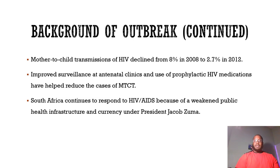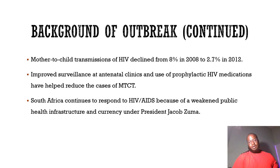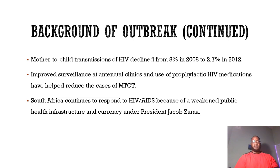Continuing background on the outbreak: mother-to-child transmission of HIV declined from 8% in 2008 to 2.7% in 2012. Improved surveillance at antenatal clinics and use of prophylactic HIV medications have helped reduce mother-to-child transmission. South Africa continues to face challenges responding to HIV and AIDS due to a weakened public health infrastructure under President Jacob Zuma, which makes it harder to respond as promptly as needed, even as advances have been made toward mitigating the spread.